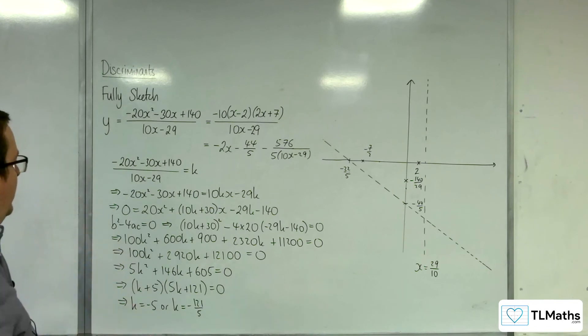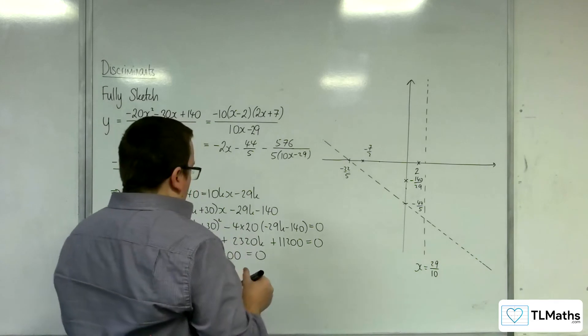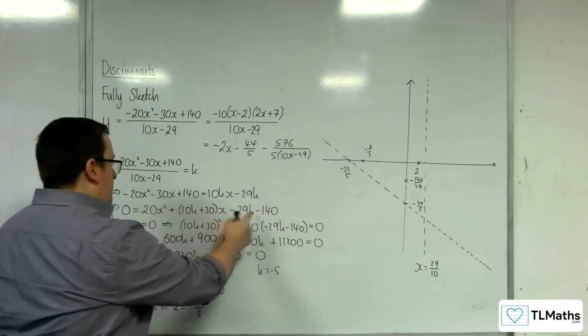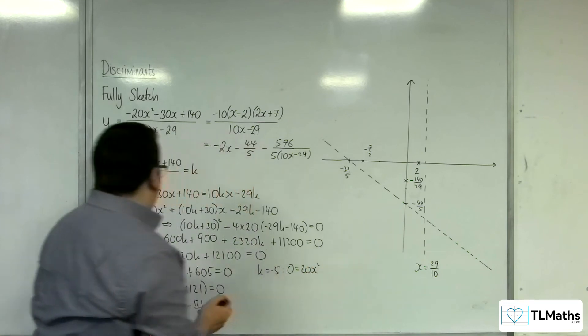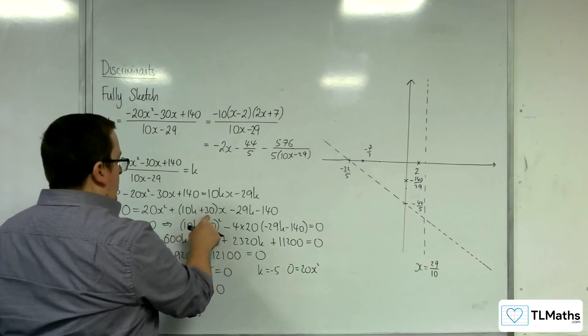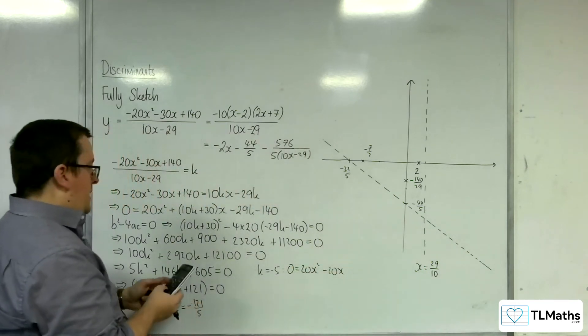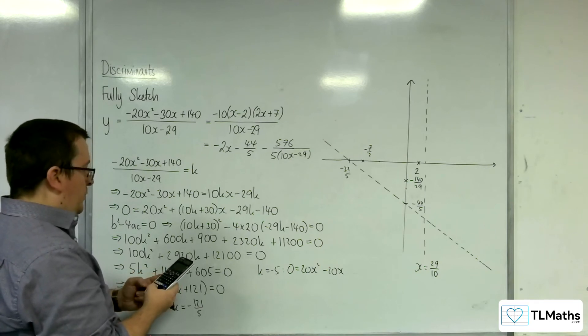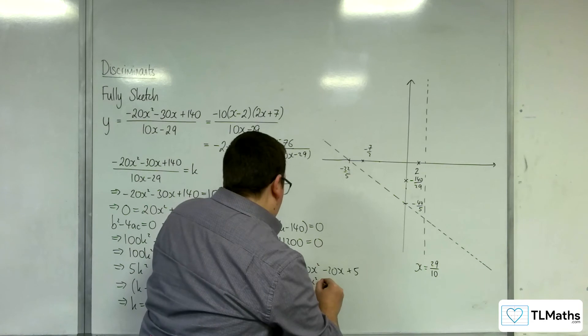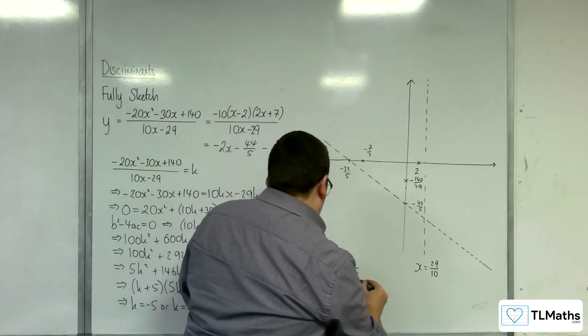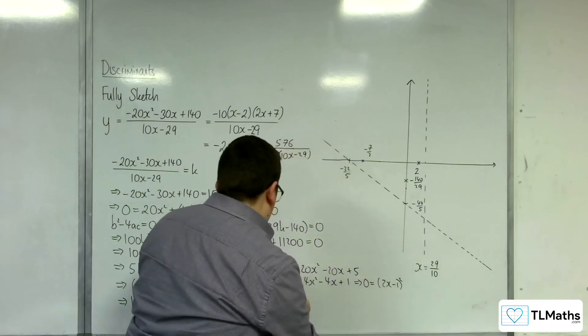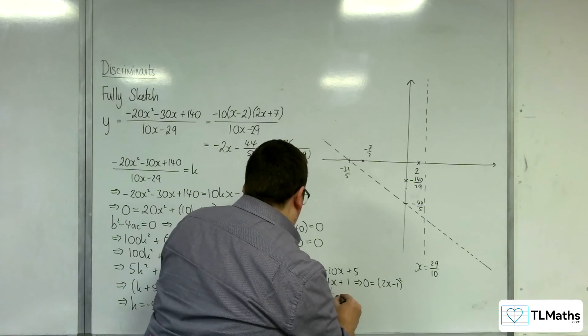So I need to find now the x values that go with that. When k is equal to minus 5, I'm going to substitute that into this quadratic here. So, 0 equals 20x squared, minus 20x, and plus 5. Divide through by 5, and we get 4x squared, take away 4x plus 1. So, 0 is equal to 2x, take away 1 squared. So, x is equal to 1 half. We've got one stationary point at a half minus 5.